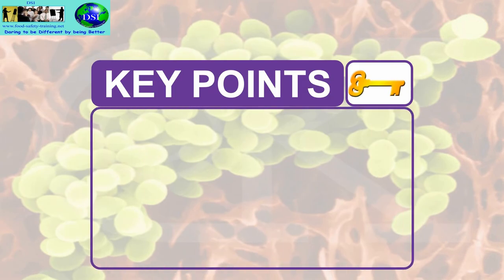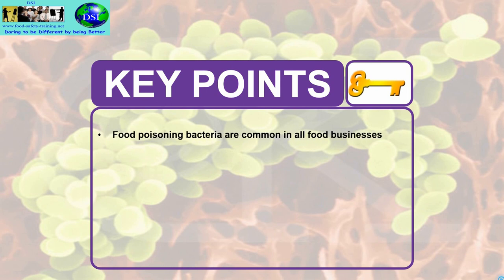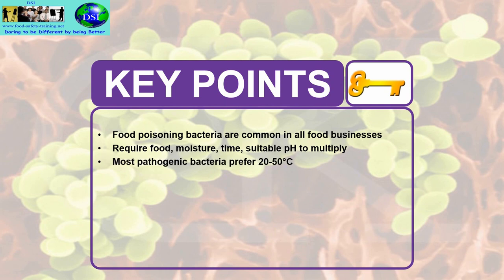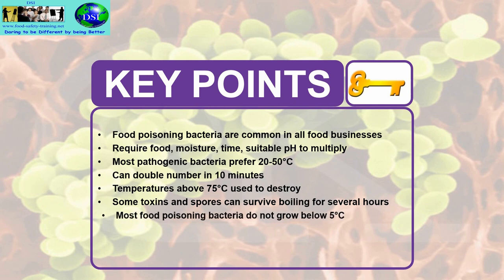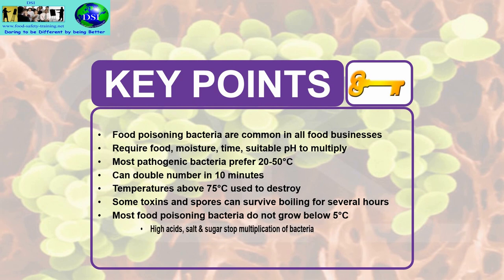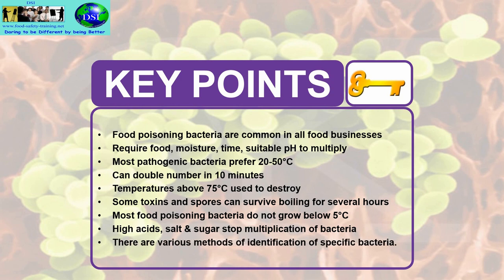Key points for Lecture 2: Food poison bacteria are common in all food businesses. They require food, moisture, time, and suitable pH to multiply. Most pathogenic bacteria prefer 20 to 50°C — called mesophiles. They can double in number in 10 minutes. Temperatures above 75°C are used to destroy them. Some toxins and spores can survive boiling for several hours. Most food poison bacteria do not grow below 5°C. High acid, salt, and sugar stop multiplication of bacteria. And there are various methods for identification of specific bacteria.